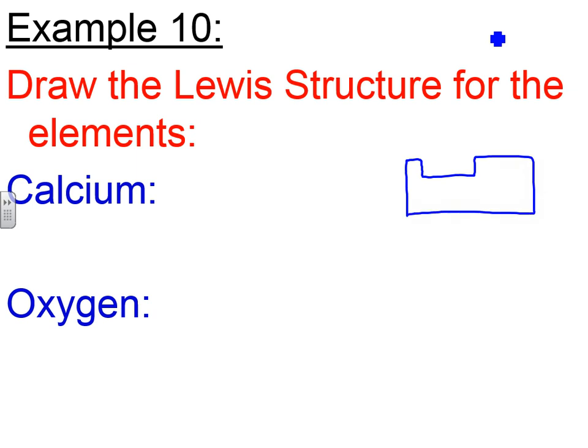If we take a look at oxygen, do the same exact analysis. Oxygen's closest noble gas is neon. Oxygen has 8 electrons and neon has 10, so oxygen will actually gain two electrons, going from 8 to 10. Since electrons are negative, oxygen will attain a negative 2 charge. This is the most common charge of oxygen: negative 2.